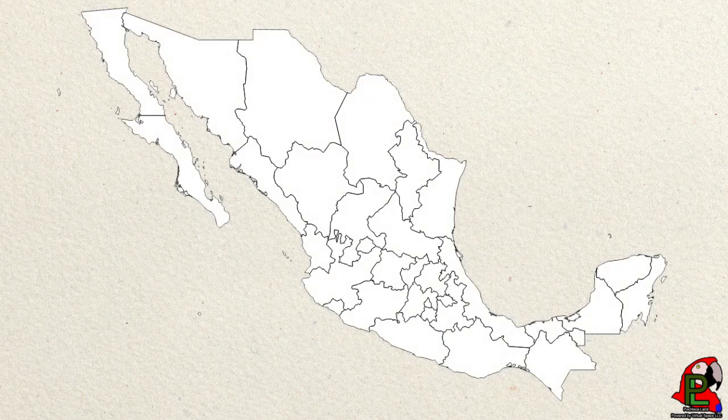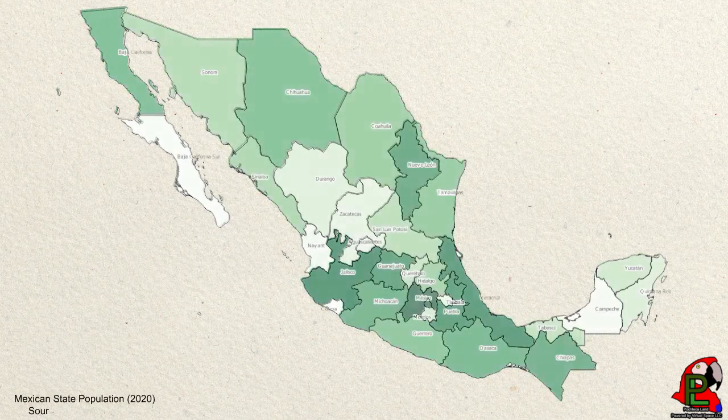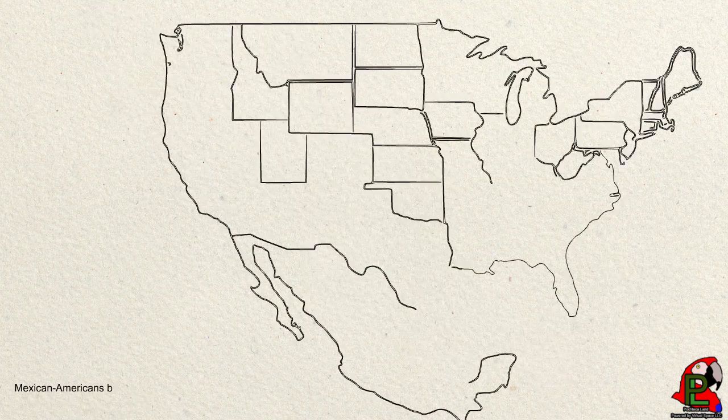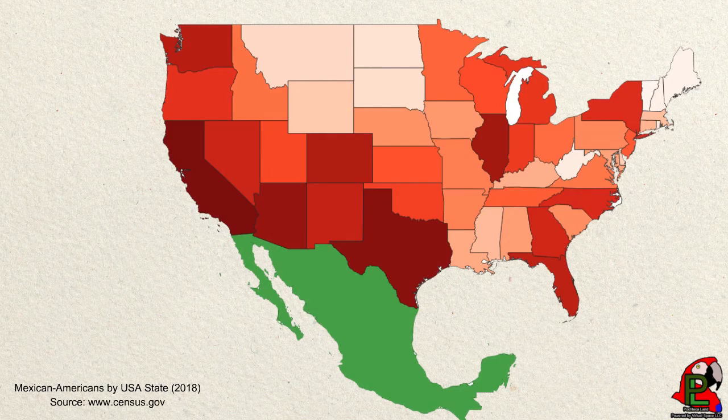A choropleth map will show that much of the population of Mexico is located in the central part of the nation. Altogether, the nation contains over 130 million people, making it the 10th most populated country in the world. Meanwhile, there are over 36 million Mexican Americans, making the United States the second country with the most people of Mexican ancestry.